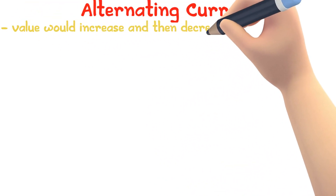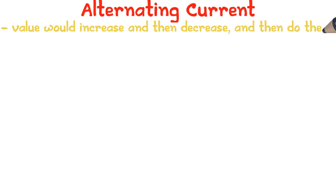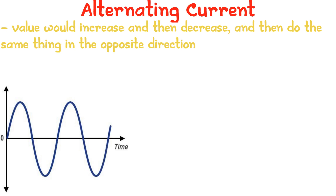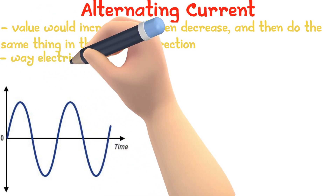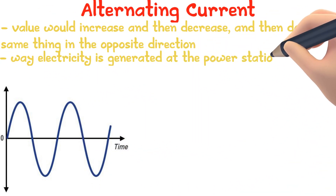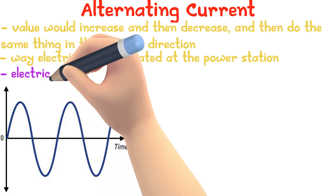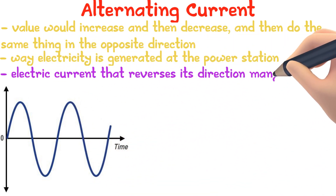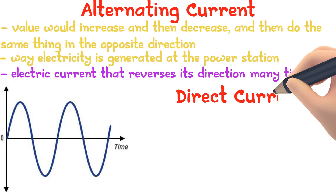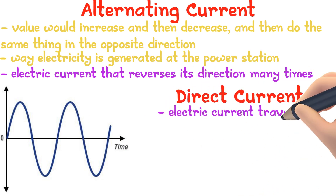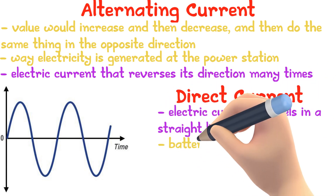Go take a look at your mains — it might show something strange. The value would increase and then decrease, and then do the same in the opposite direction. If you draw this on a graph it would look like a wave like this. This is because of the way electricity is generated at the power station, and is known as alternating current. You would find direct current, which is when current travels in a straight line, in batteries and cells.